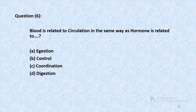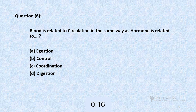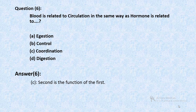Question 6: Blood is related to circulation in the same way as hormone is related to — addition, control, coordination, or digestion? The answer is C.